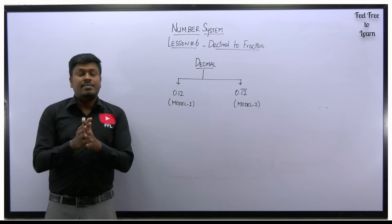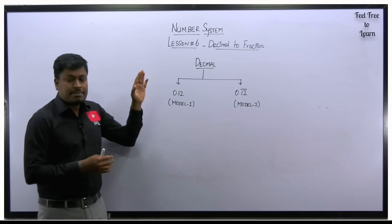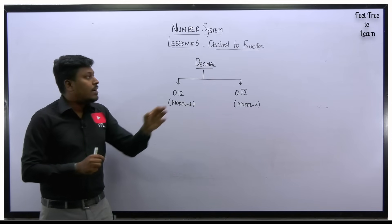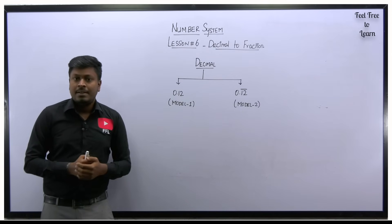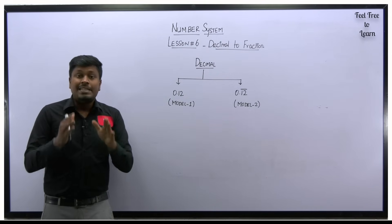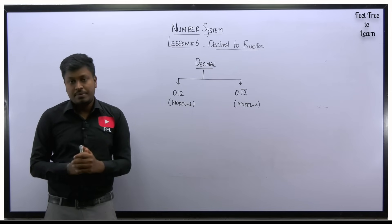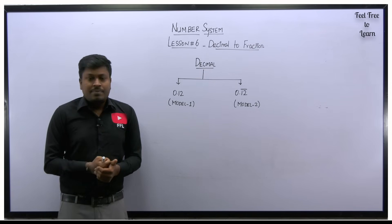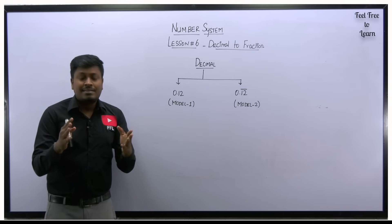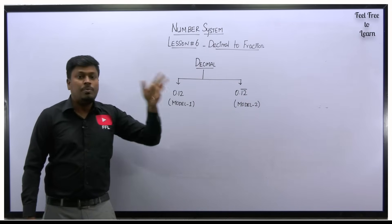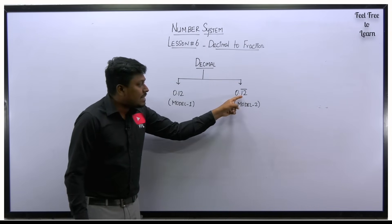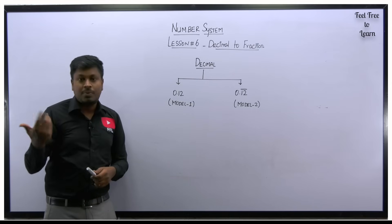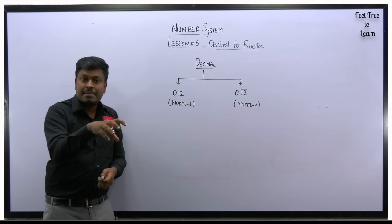Welcome to lesson number six on the number system topic. We are going to learn one of the most important concepts: converting a decimal number into a fraction. This number system topic is the basics of complete quantitative aptitude, so always start from lesson number one. In exams, they give numbers like 0.12 bar, and our target is to convert such decimal numbers into fractions like 9/12, 13/14, or 96/102.